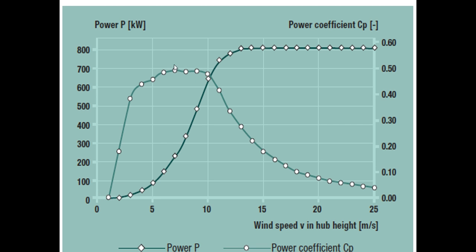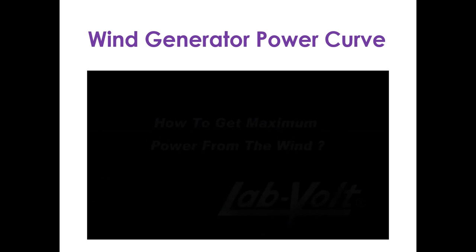The Cp versus wind speed curve is closely related to a second-order system. A simple transfer function in the s-domain is 1 divided by (s² + s + 1), and depending on wind turbine dynamics this transfer function will change.